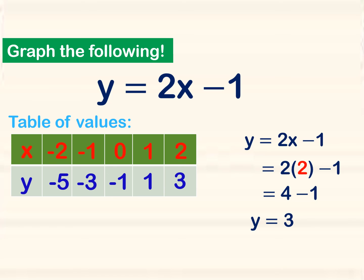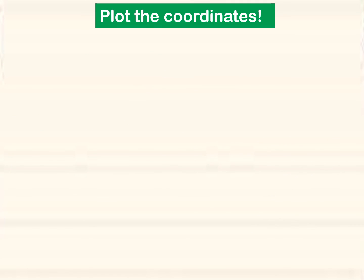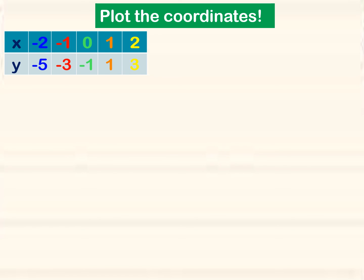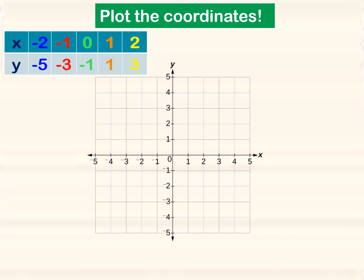Now that we have completed our table of values, we are ready to graph. We are going to plot the coordinates on a coordinate plane. Color coding: blue is (negative 2, negative 5), red is (negative 1, negative 3), green is (0, negative 1), brown is (1, 1), and yellow is (2, 3). After we plot the coordinates, we connect the points and name the line y is equal to 2x minus 1. Whatever the equation, it is the name of the line.